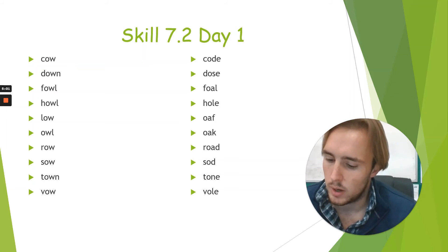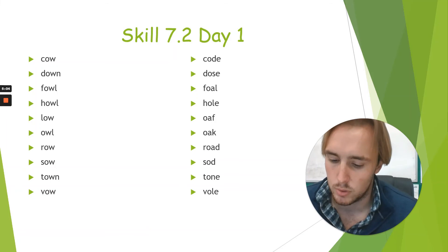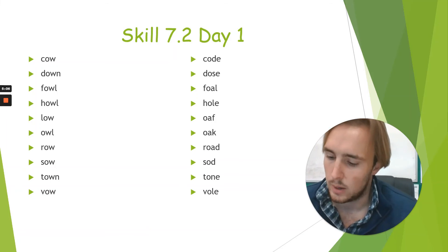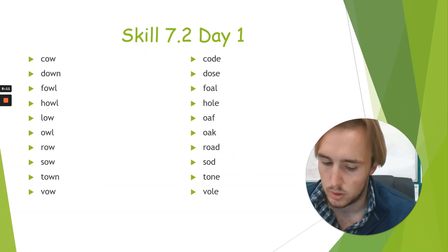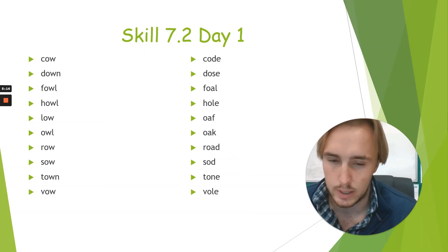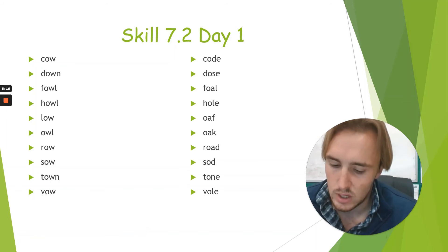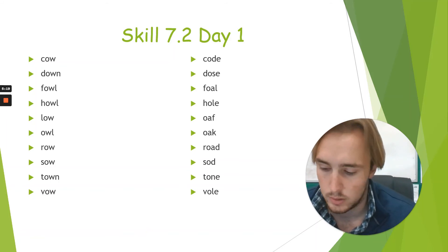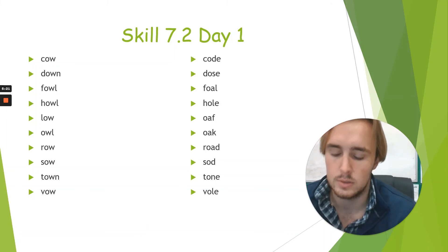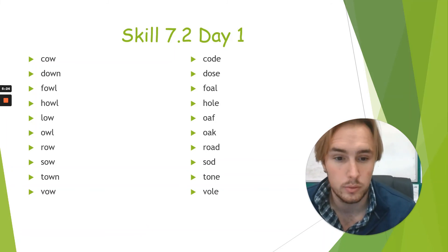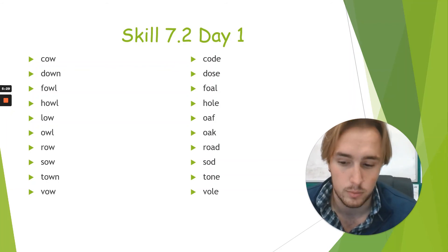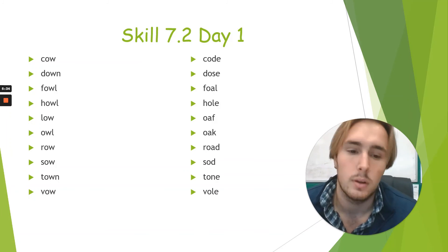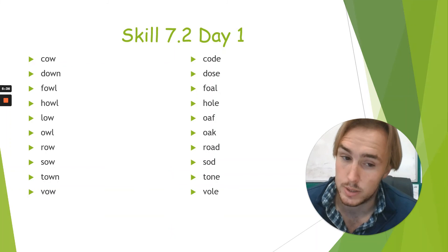If you already know how to make the short O sound, let's listen for the short O sound in some words. If you hear the short O sound in the word, say OH. If you do not hear the short O sound, say no. Let's go: foul — dose, that was a short O sound — howl, that was a long O sound — tone, that's a short O sound, you should have raised your hand.